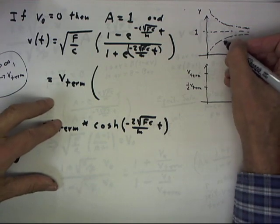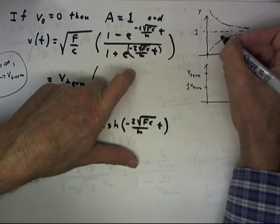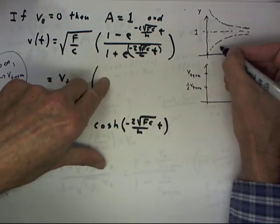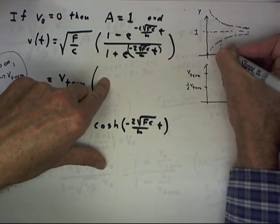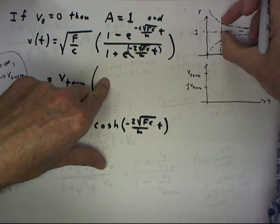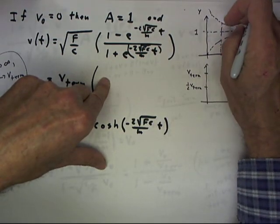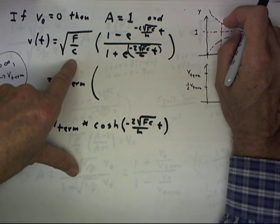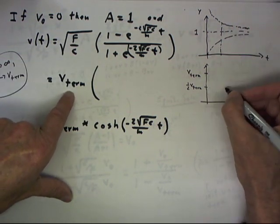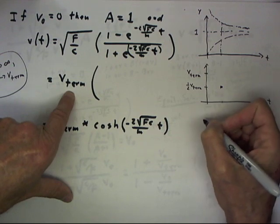How do we get a graph of one function divided by another? If we have the graphs of both functions, we can construct this graph at least approximately. At a particular point, the value of the numerator function is about half the value of the denominator function — that is, this distance is about half this distance — which means the ratio is about one half. That gives us a velocity of one half the square root of f over c, which is one half the terminal velocity, giving us a point on the graph.